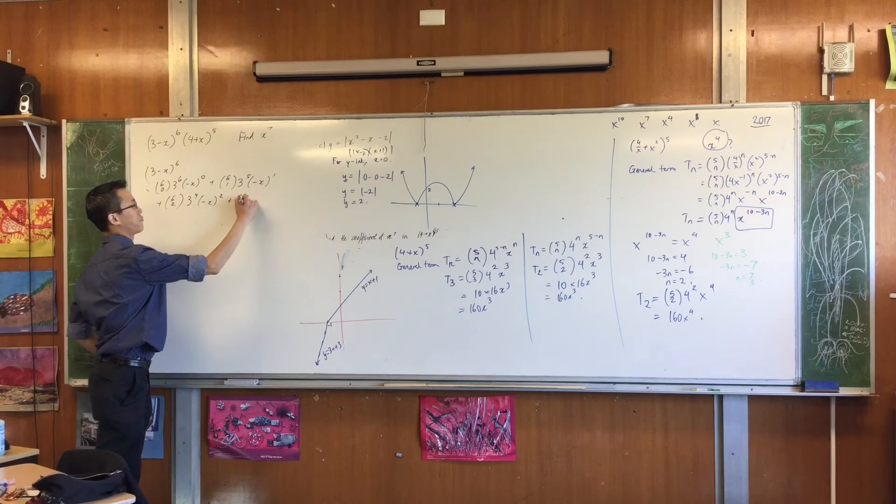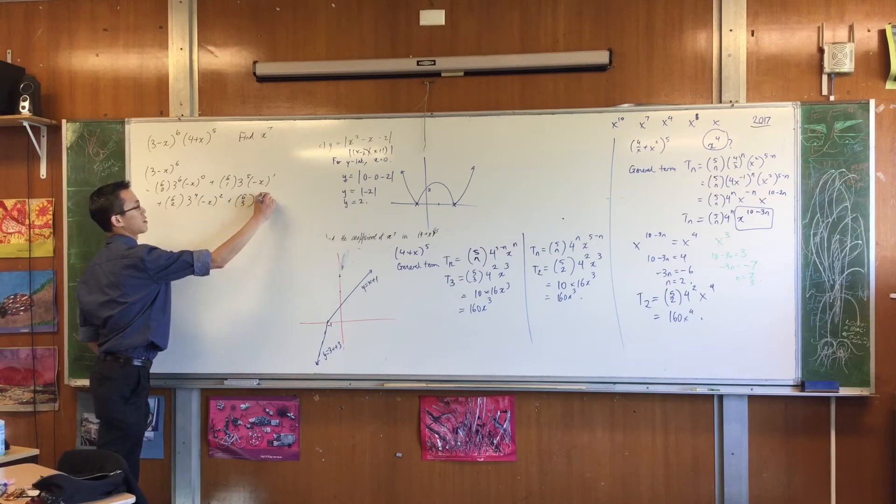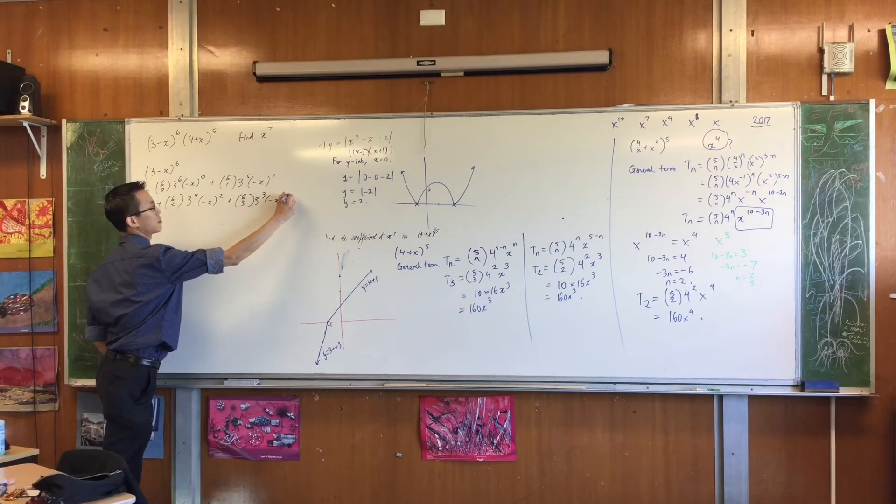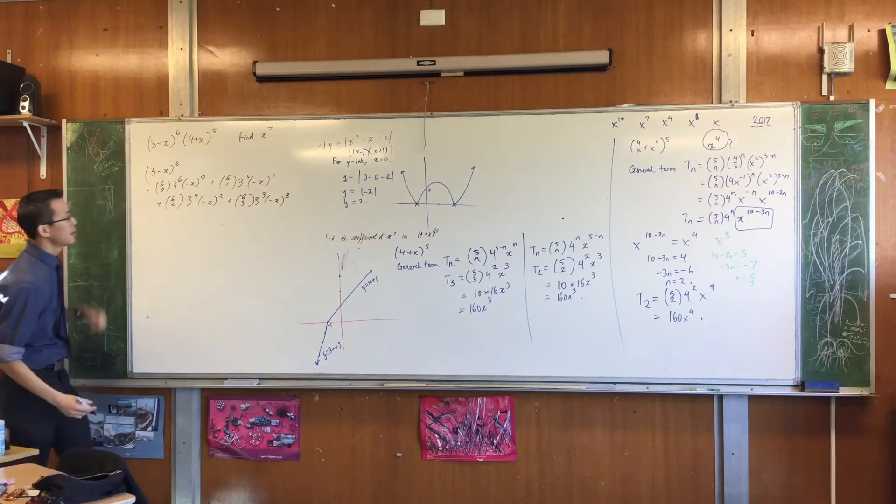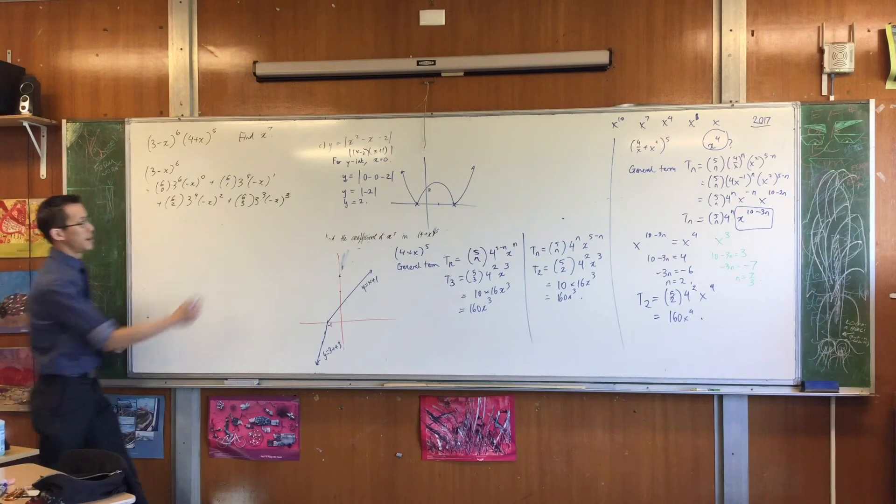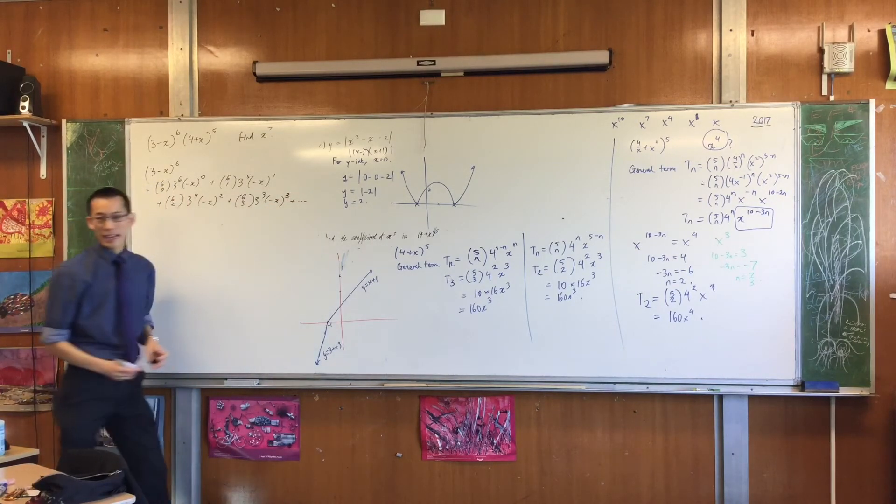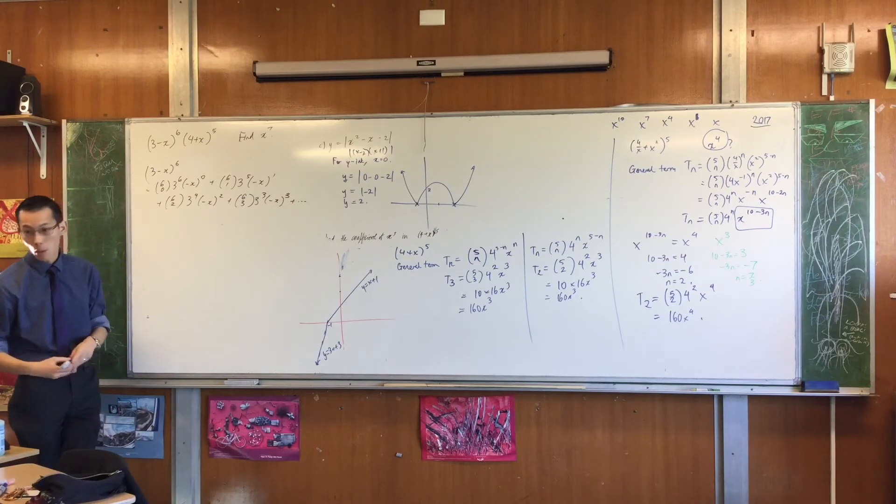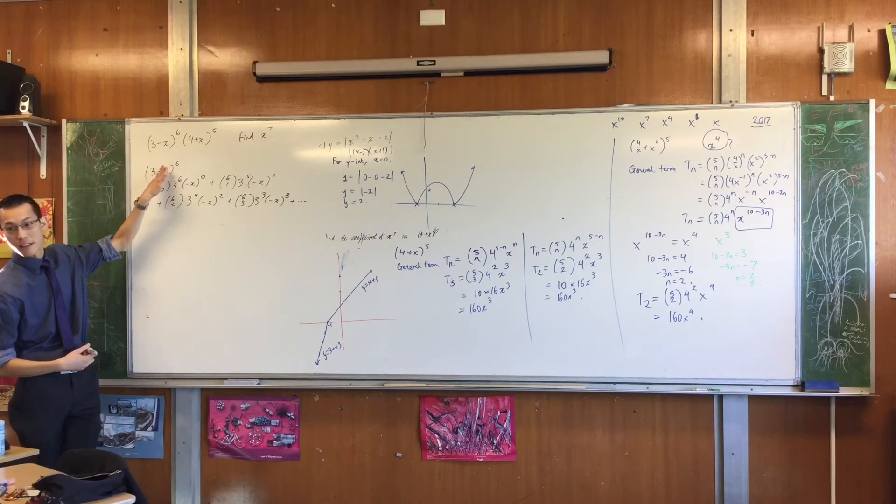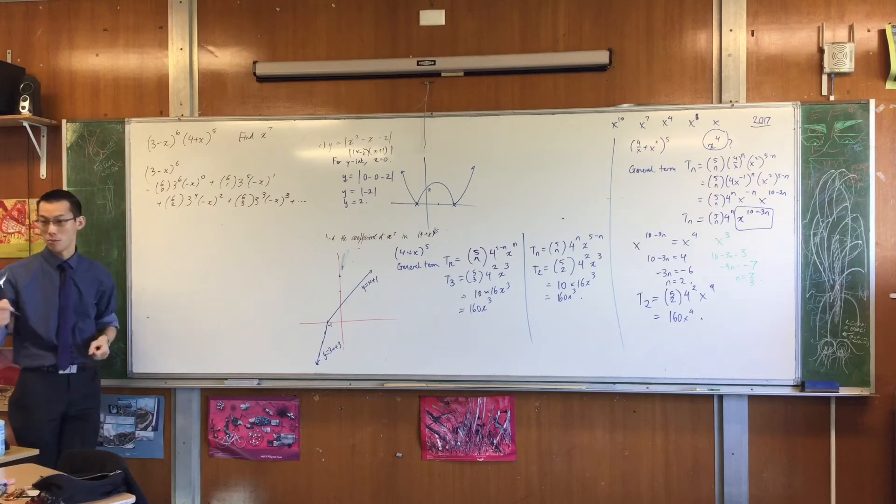Alright, I'm going to write another term. 3 cubed minus x cubed. Now, dot dot dot. I can continue, right? But I'm going to pause there. This is what happens when I expand this left-hand side, or the left-hand binomial.